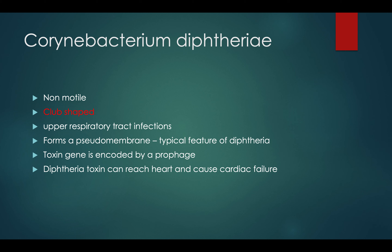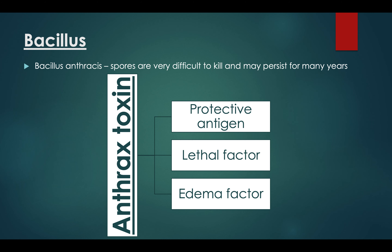This toxin can reach the heart and cause cardiac failure — not likely to be tested, but just noted. The second one is Bacillus, and specifically Bacillus anthracis, the causative organism for anthrax. The spores of B. anthracis are really difficult to kill and can remain in soil or air for many years.